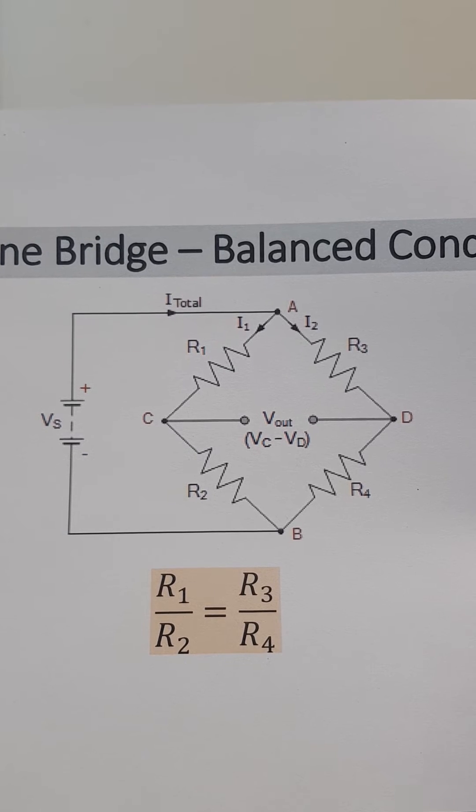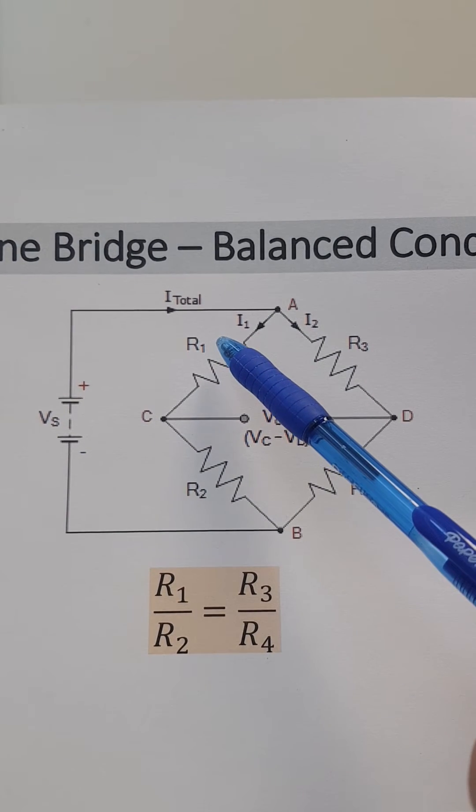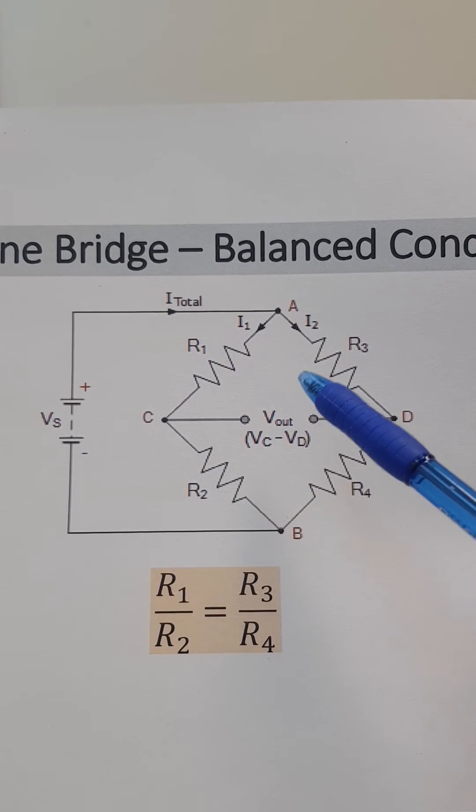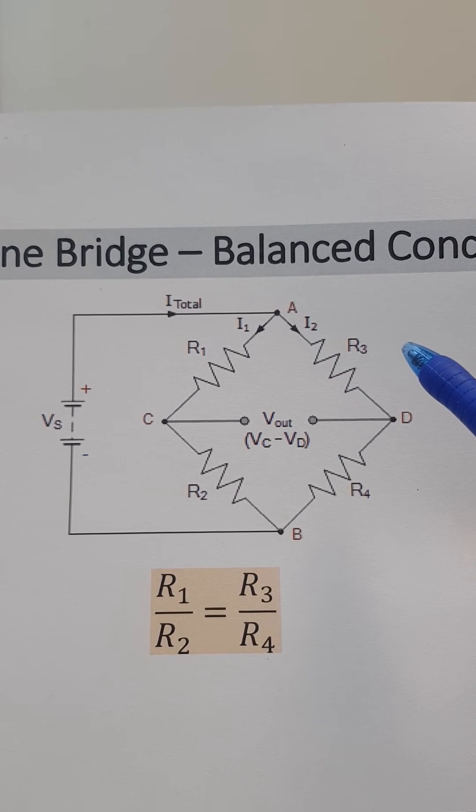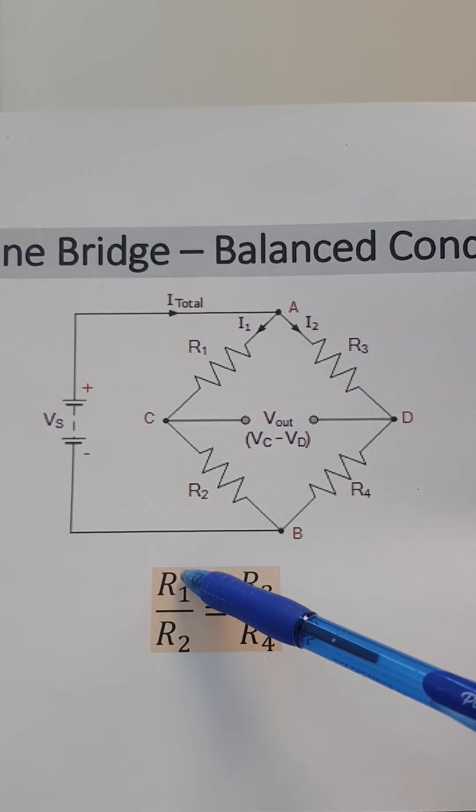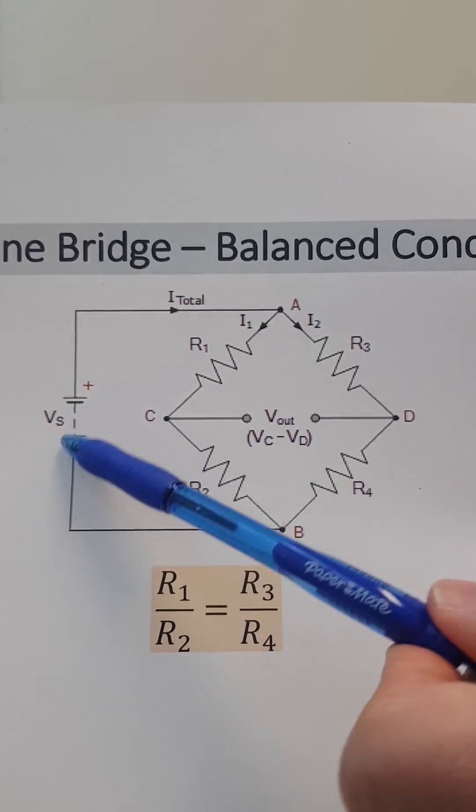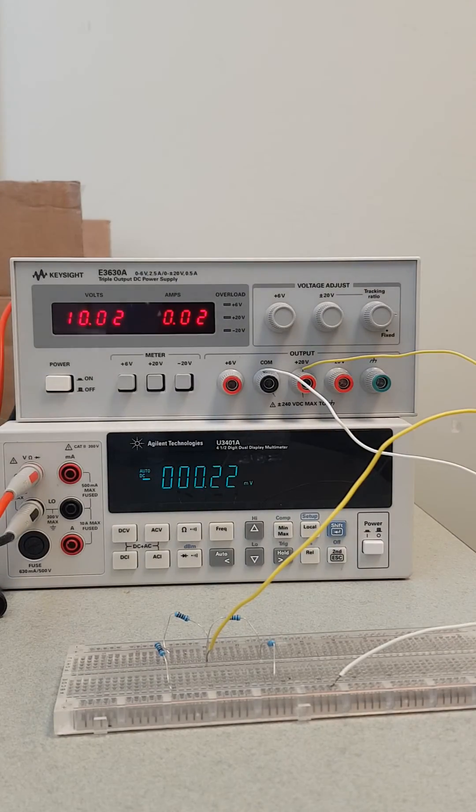Okay, now let's do some demonstration. I have here a circuit with R1 and R2 both equal to one kilo ohm, R3 and R4 both equal to 330 ohms. So the ratio is equal to one and I have the voltage equal to 10 volts.